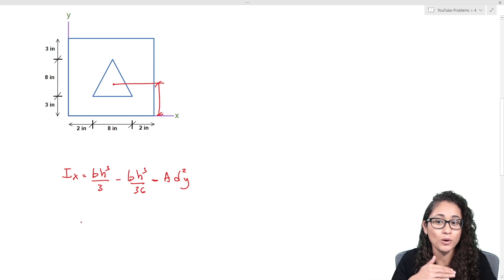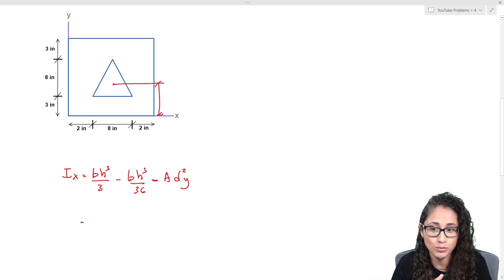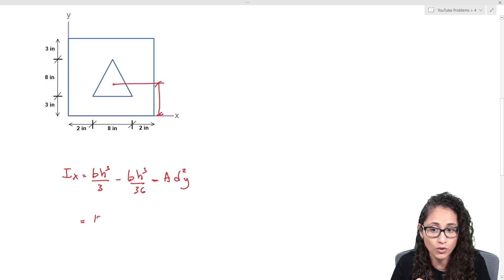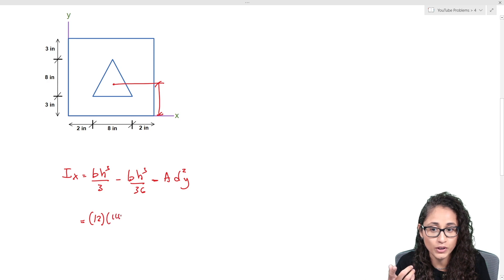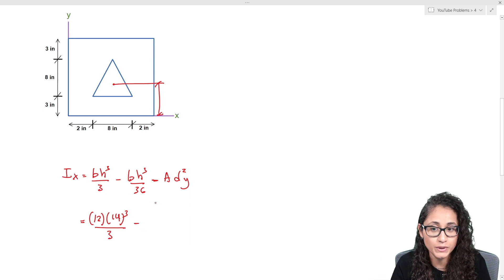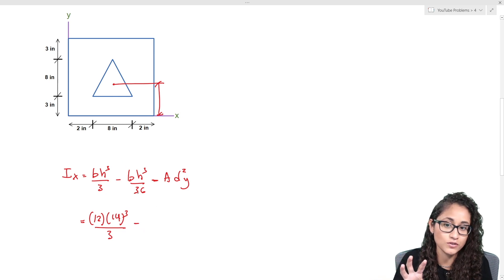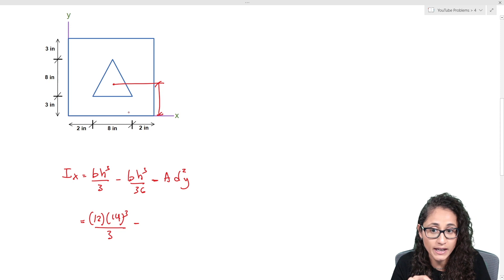Now let's plug in the numbers. For the rectangle: b = 12, h = 14, cubed and divided by 3. Then minus — for the triangle: b = 8, h = 8, cubed and divided by 36.